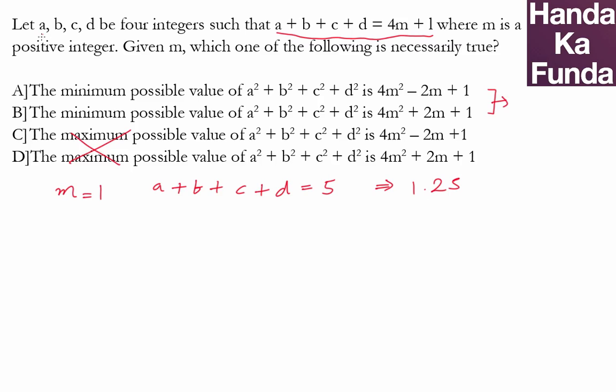But that is not possible because they are all integers, which means I need to split them in such a way that they are closest to the equal values. I can do that as a as 2, whereas keeping the other three equal as 1, 1, 1.